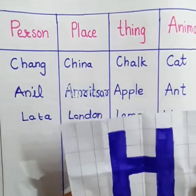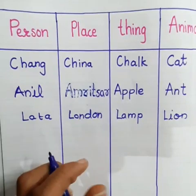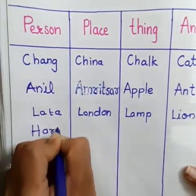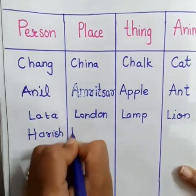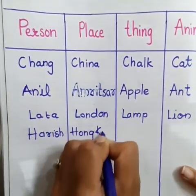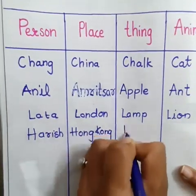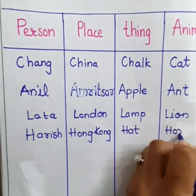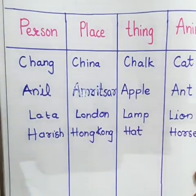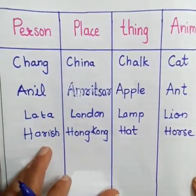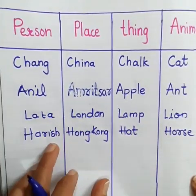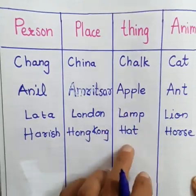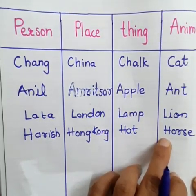Let us take another alphabet. We have taken H. So let us think and write the name of a person, place, thing, and animal. The name of the person is Harish; place: Hong Kong; thing: Hat; and animal: Horse.